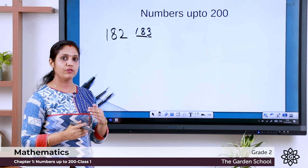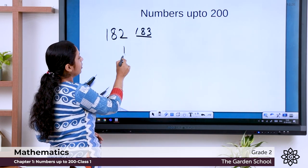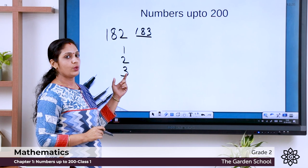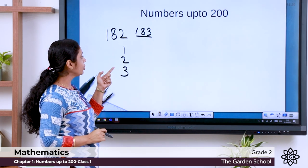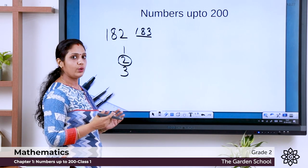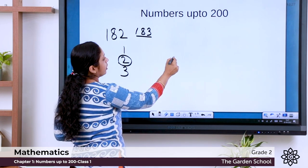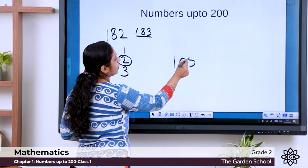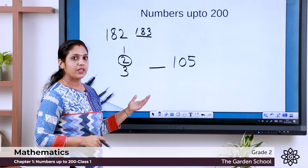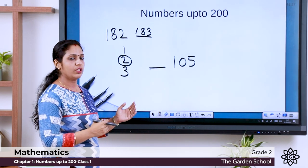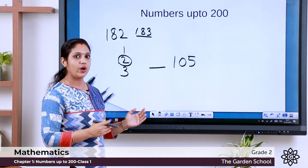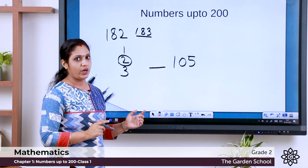Now we will write the number which comes before. 'Before' means: just check — 1, 2, 3 — the number before 3 is 2. Like this, we can do it with three-digit numbers also. What is the number that comes before 105? We count: 100, 101, 102, 103, 104, 105 — so the number before 105 is 104. Write it down.